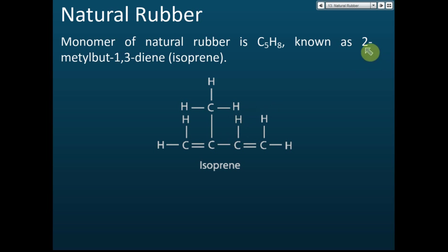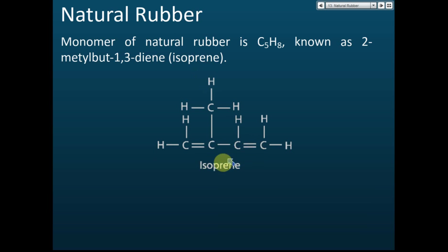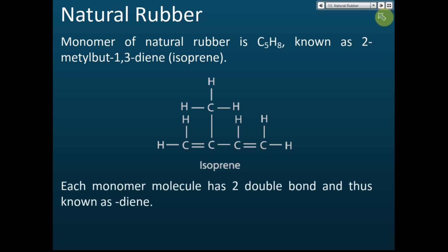The name 2-methylbut-1,3-diene is less important and is seldom asked in exams. The name you must remember is isoprene. It is classified as an alkene because it contains the functional group of an alkene. Each monomer molecule has two double bonds and is thus known as a diene.